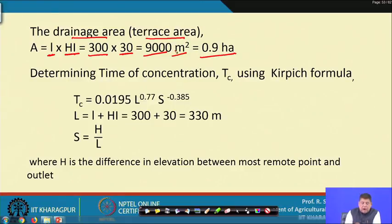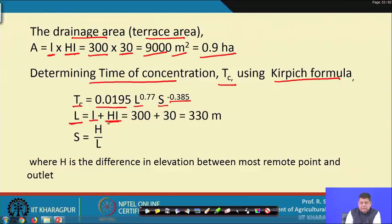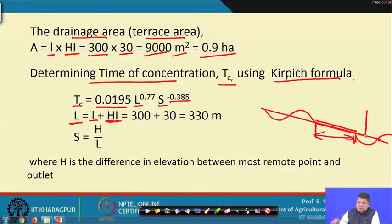To determine intensity I, we need the time of concentration using the Kirpich formula: T_c = 0.0195 × L^0.77 × S^(−0.385), where L is total flow length and S is the slope over the flow length. The total flow length = channel length + horizontal interval = 300 + 30 = 330 meters.